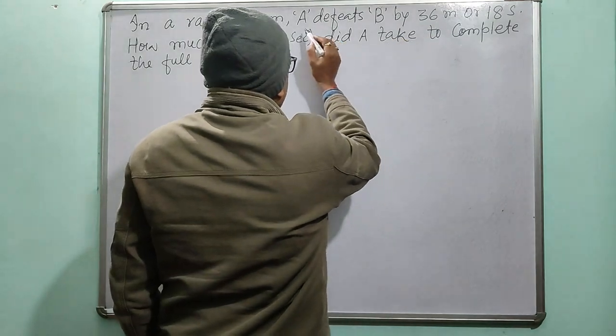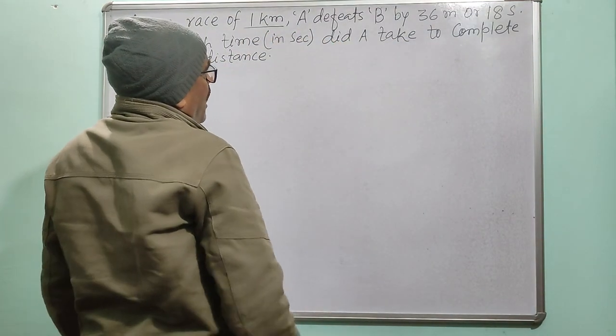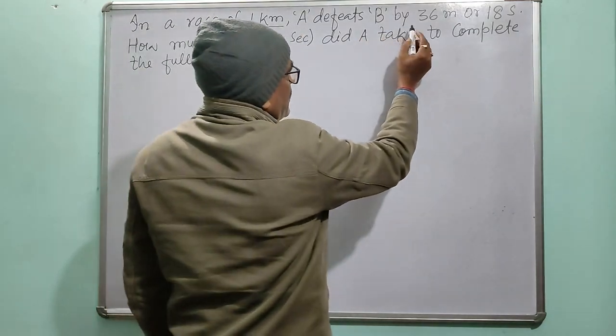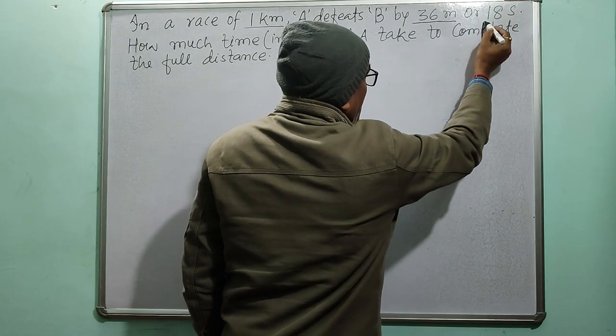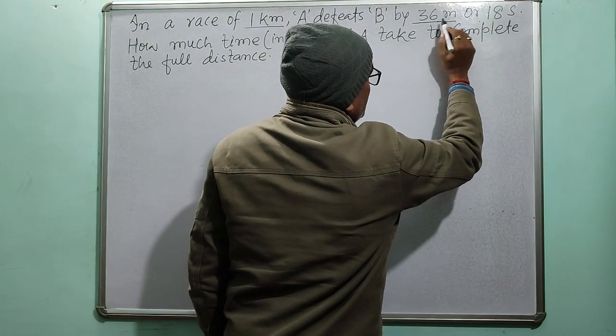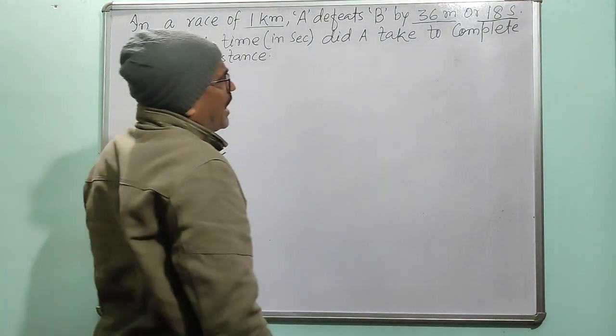A and B both participate in a 1 km race and A defeats B by 36 meters of distance. In this distance, B takes 18 seconds.